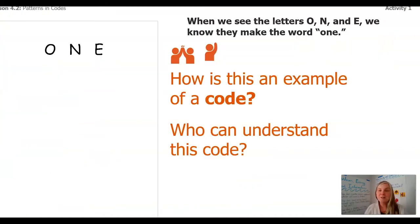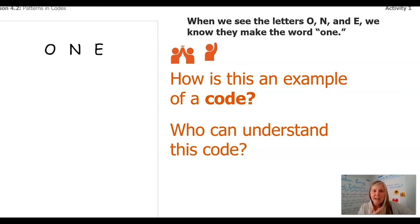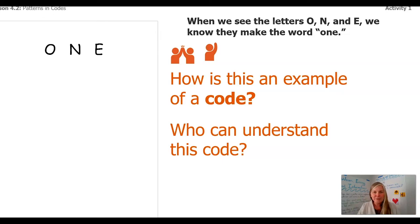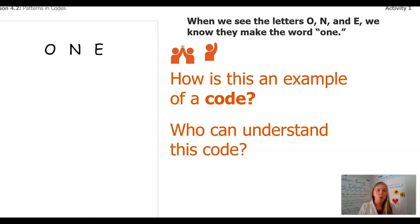When we see the letters O-N-E, we know they make the word 'one.' How is this an example of a code, though? Who can understand it? Is it because we're both working off of the English language? We both understand that when O-N-E is put together it says 'one.' We share that understanding.